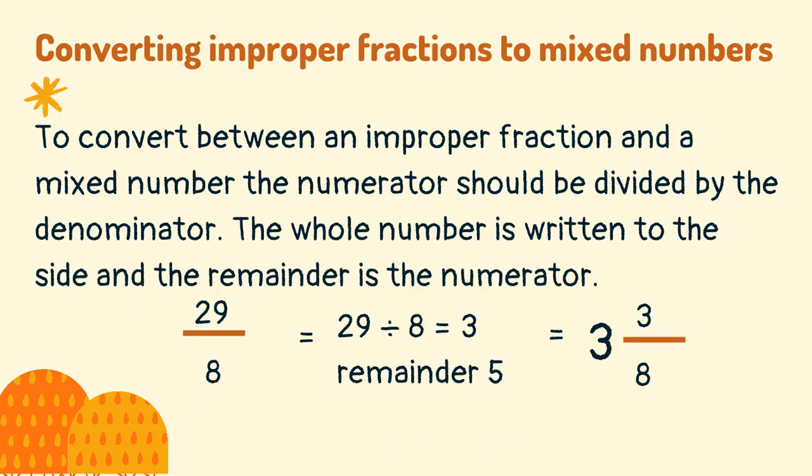To convert between an improper fraction and a mixed number, the numerator should be divided by the denominator. The whole number is written to the side and the remainder is the numerator.